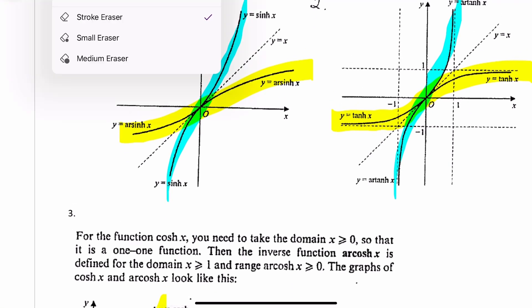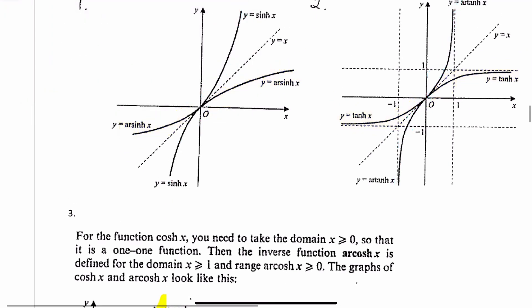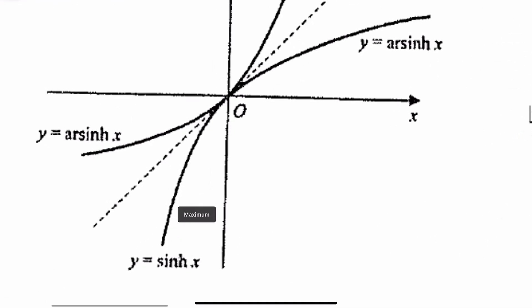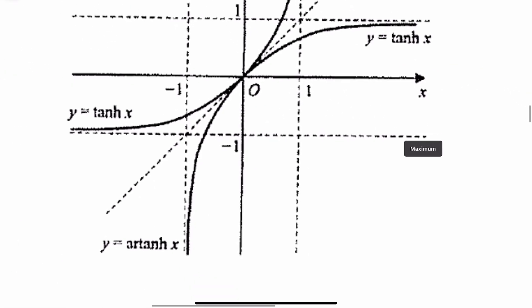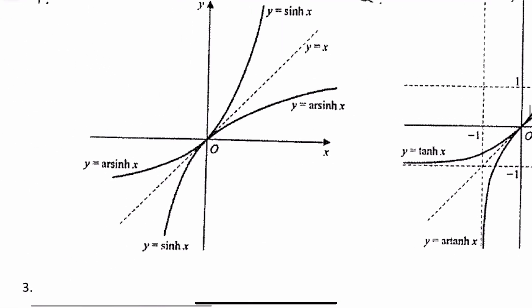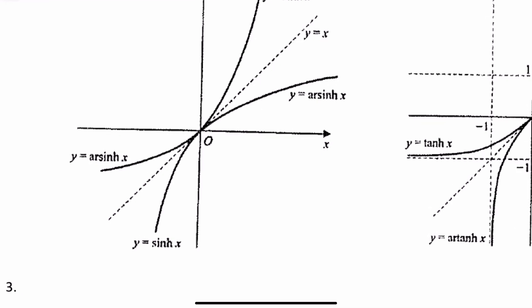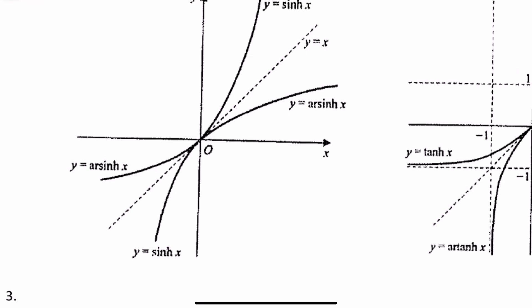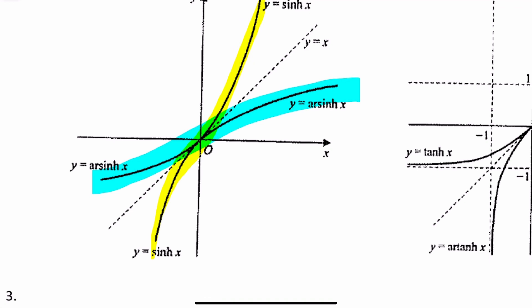We're going to look at the inverse functions here. Instead of writing these as inverse, we use arc hyperbolic sine and arc hyperbolic tan and so on — that means the same as hyperbolic tan to the minus 1, hyperbolic sine to the minus 1, and so on. How you get these effectively is by reflecting on your line y equals x. What I'm highlighting in yellow is your hyperbolic sine, and if you reflect that, that is arc hyperbolic sine, or inverse hyperbolic sine.